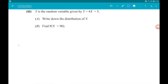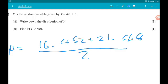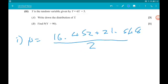So μ is 16.452 add 21.548, all over 2. That quite nicely gives us μ is equal to 19. Cool.